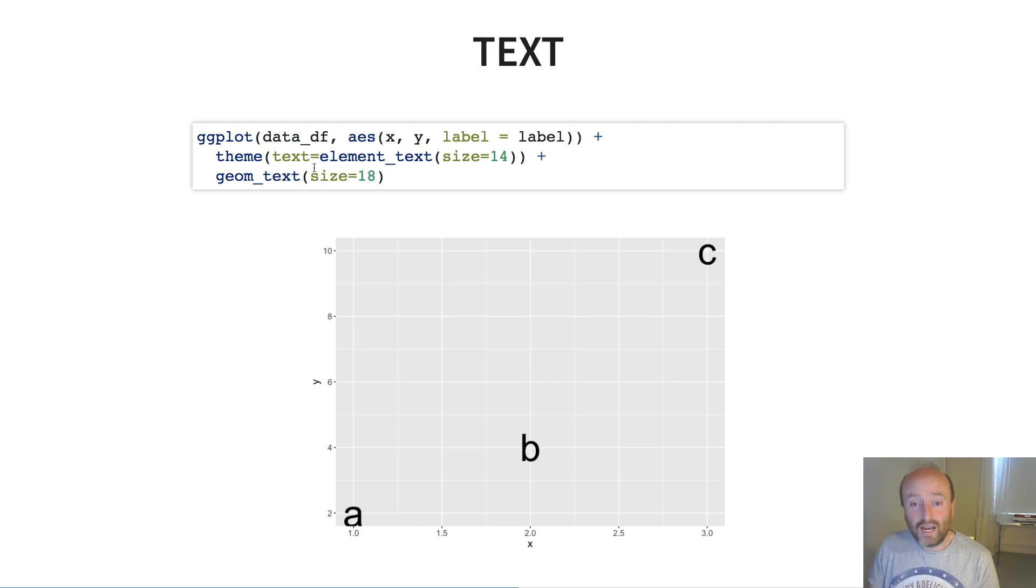However, if I change that geom to be geom_text, then the points here get replaced with the actual labels themselves. So I get the text labels A, B and C, and they get plotted at the corresponding x and y values. So notice the only thing that I've changed from this slide and the previous one is I've changed geom_point to be geom_text, and I've got quite a different visualization here.